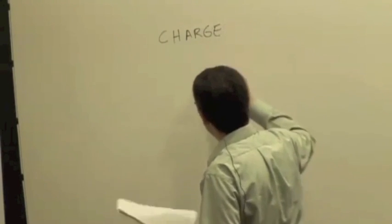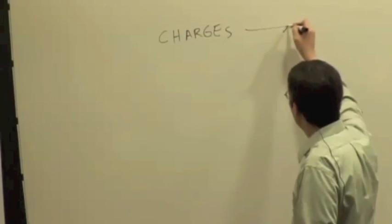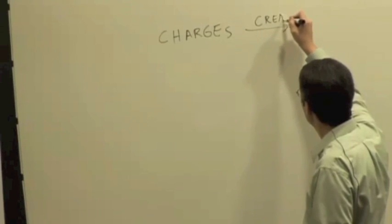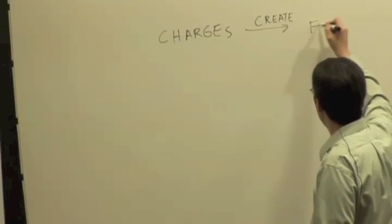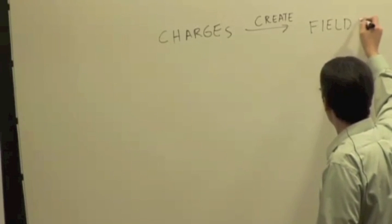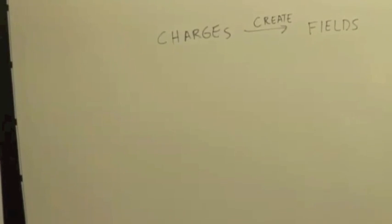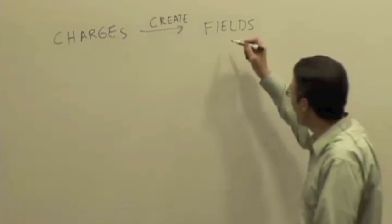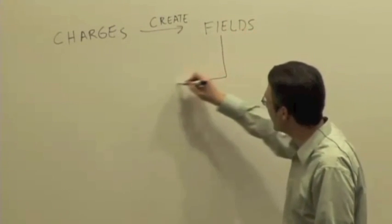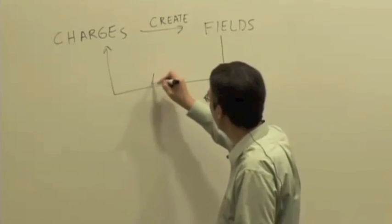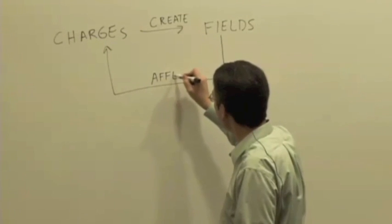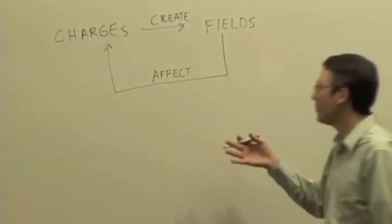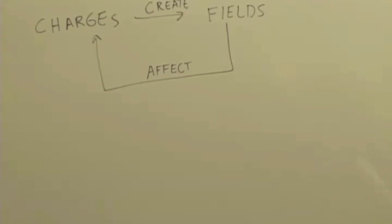And we said that charges create fields in space. And then if you have fields in space and you place a charge at a particular observation location, that field is going to affect or exert forces on other charges. So charges create fields, fields affect charges. That's the basic idea.